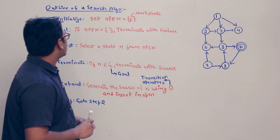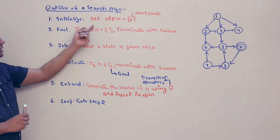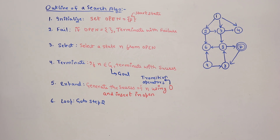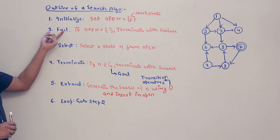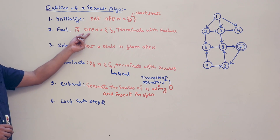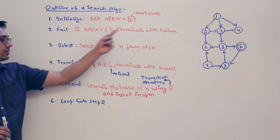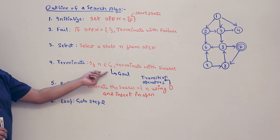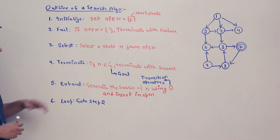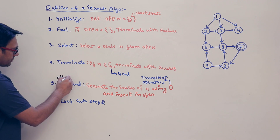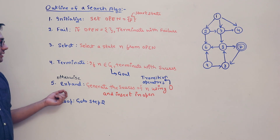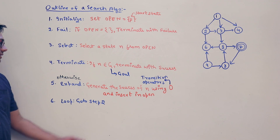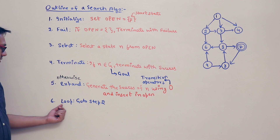The algorithm works as follows: First, initialize the set 'open' with the start state. 'Open' is a data structure. Otherwise, fail — this is the termination condition. If open is equal to empty, terminate with failure. Else, select a state n from open. Terminate if n is a goal state — that means if we reach the goal state then terminate. Otherwise, expand — generate the successors of n using a transition operator, insert them in open, and go to step 2.